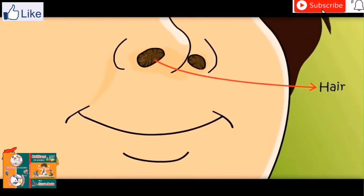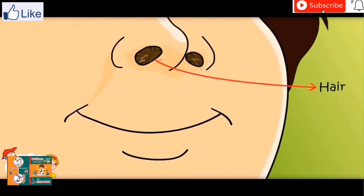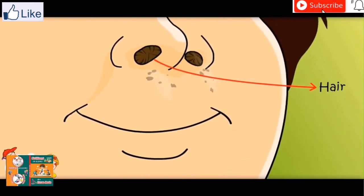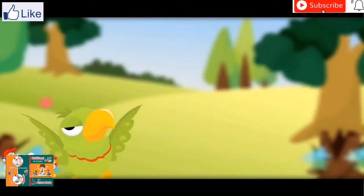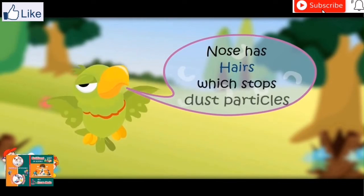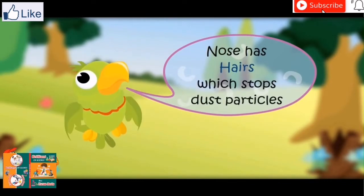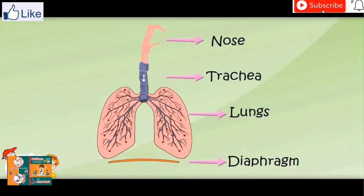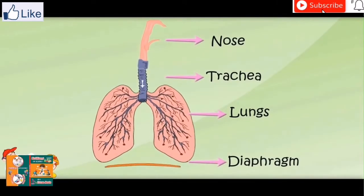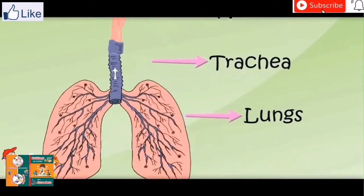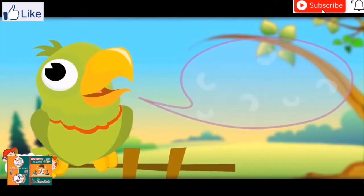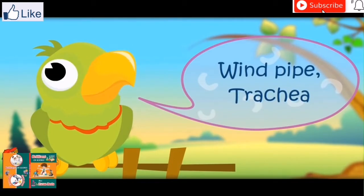What do these hairs do? Air enters the nose and it has some dust particles — these hairs stop them. Nose has hairs which stop dust particles. It is going to a pipe, like a water pipe. Yes, it is the wind pipe, also known as the trachea.